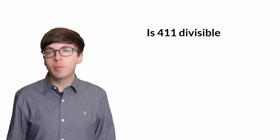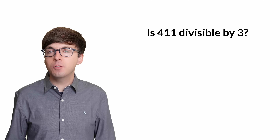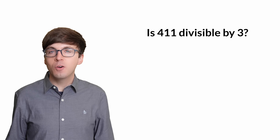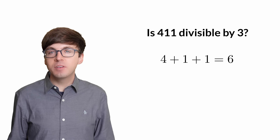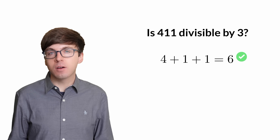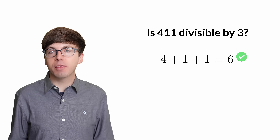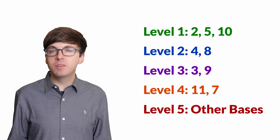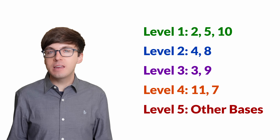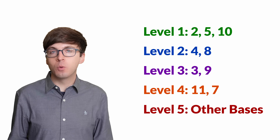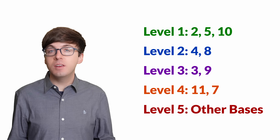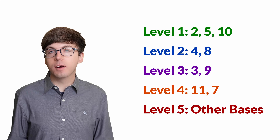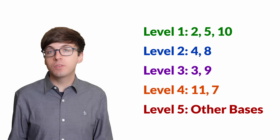To check if a number is divisible by 3, there's a trick: we can add up the digits and see if that sum is divisible by 3. Let's find divisibility rules like this for each number up to 12, see why they work, and in level 5 we'll explore some rules in other bases.